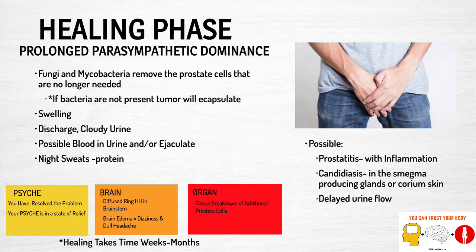If the bacteria are not present due to antibiotic use, the tumor will encapsulate because it just can't be broken down without the required bacteria. At this stage, there is also possible prostatitis — inflammation of the prostate — along with the healing process. Candidiasis is also possible, as well as that delayed urine flow mentioned before.